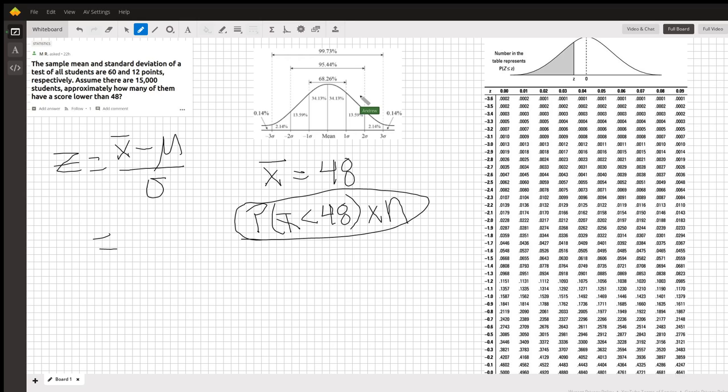And in this case, that's 48 minus 60 over 12, which gives us negative 1.